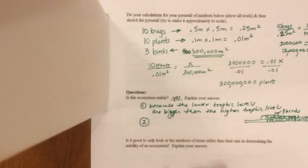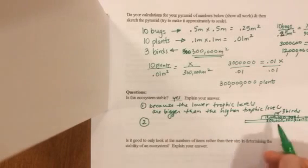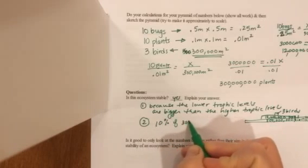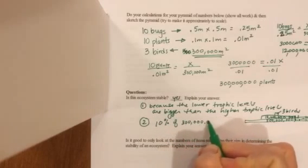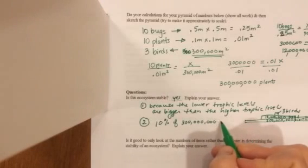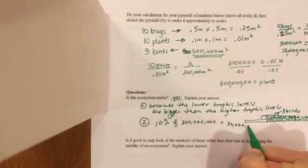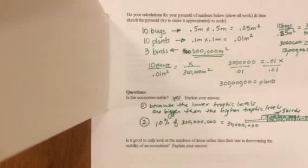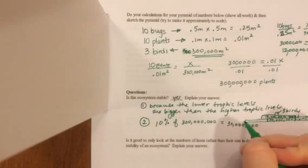Another reason I can look at is assuming 10% efficiency. 10% of 300 million is 30 million. And so I only have 12 million bugs. So based on that logic, this is stable.